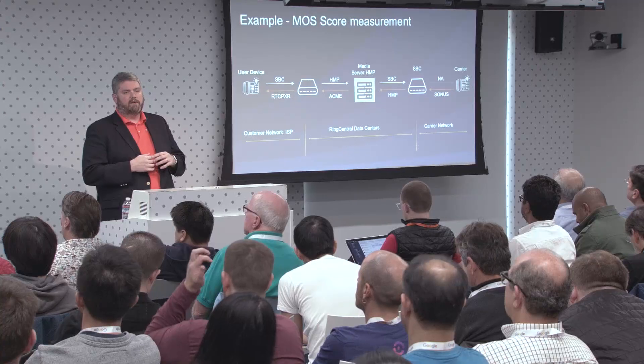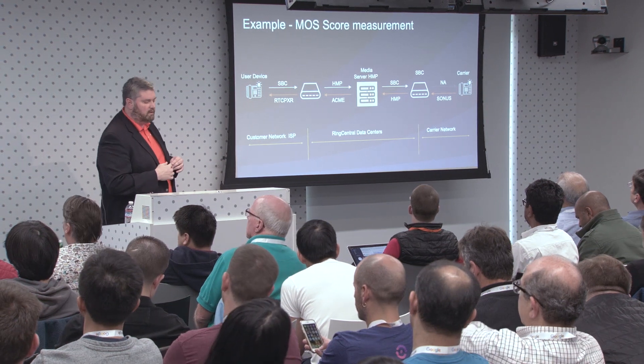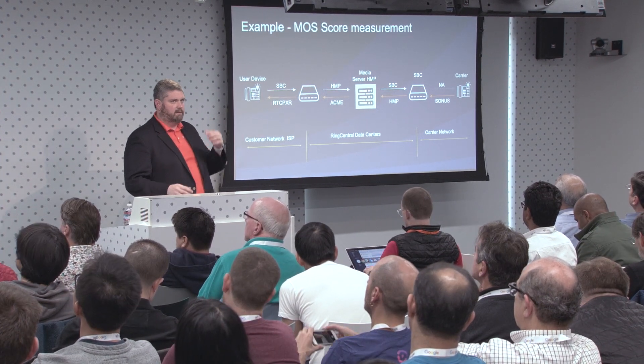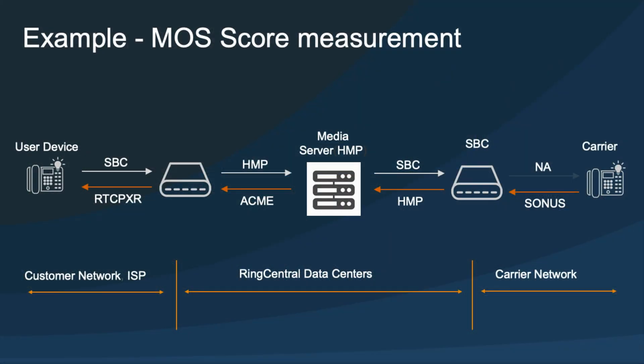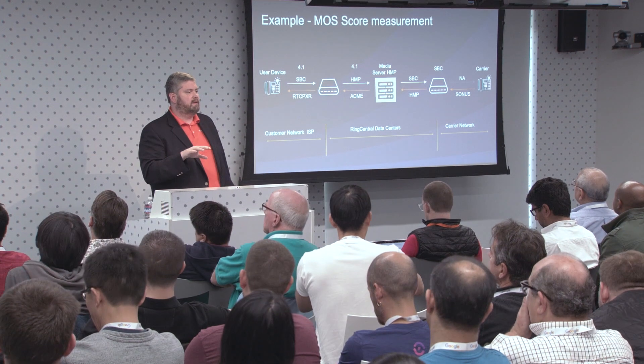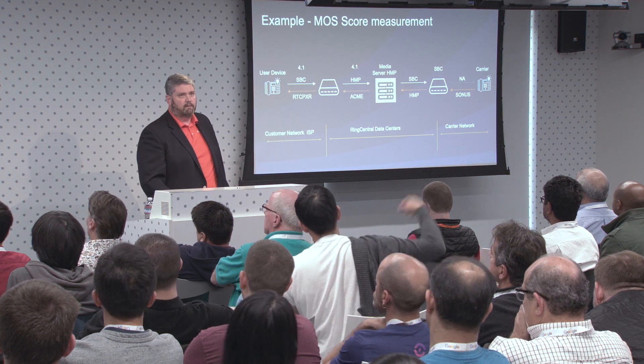Let's build out a simple example. This is what a typical call looks like in our network. We're going to pick a blue user device hard phone. The first reporting element moving down the network stream is the session border controller — it could be Oracle, it could be anyone, we even code our own — and it reports a 4.1 MOS score. Our media server, which has our most advanced algorithms for detecting quality, also scores it 4.1.